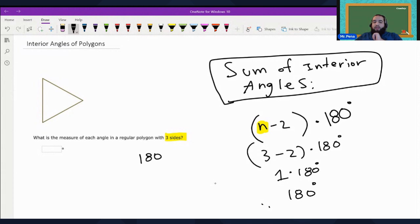Now we take 180 and divide it by three sides. And so what we end up getting is 60 degrees. So each angle is 60 degrees.